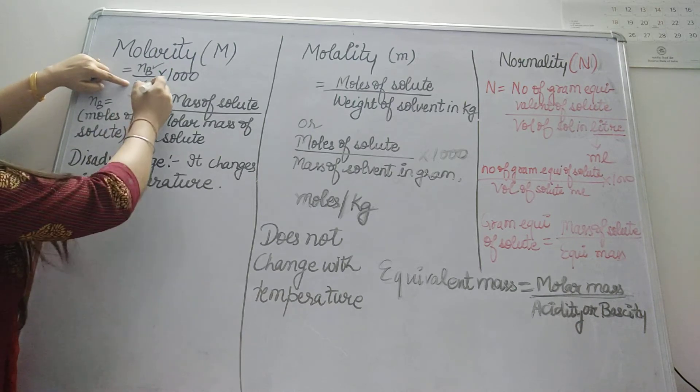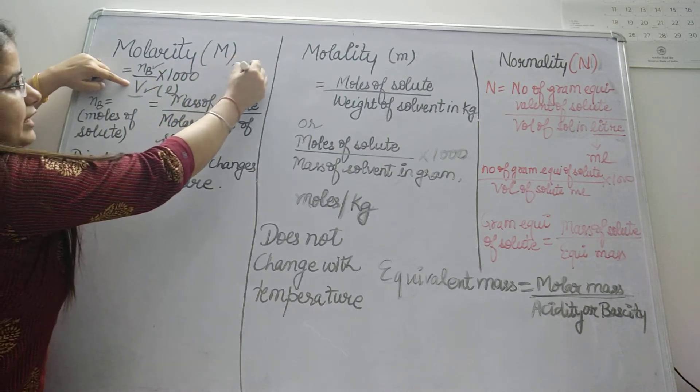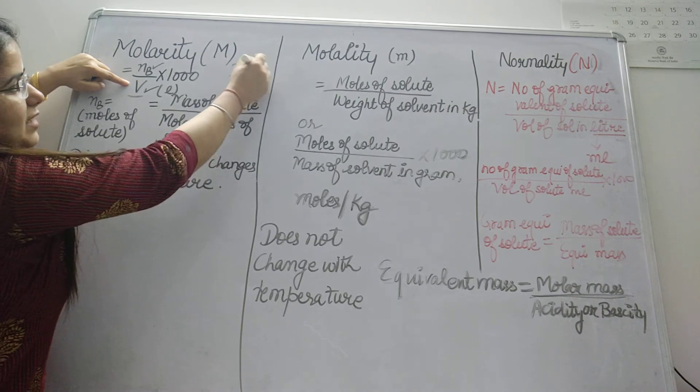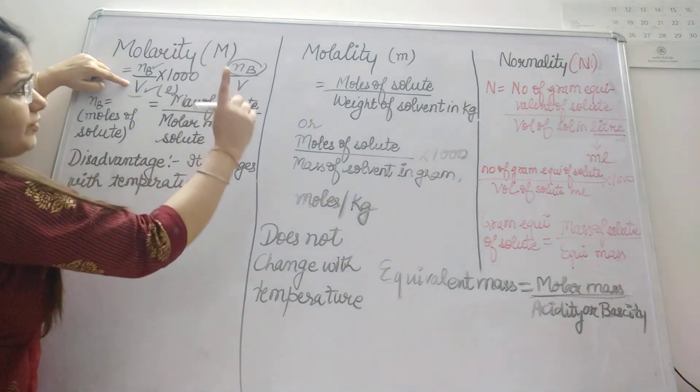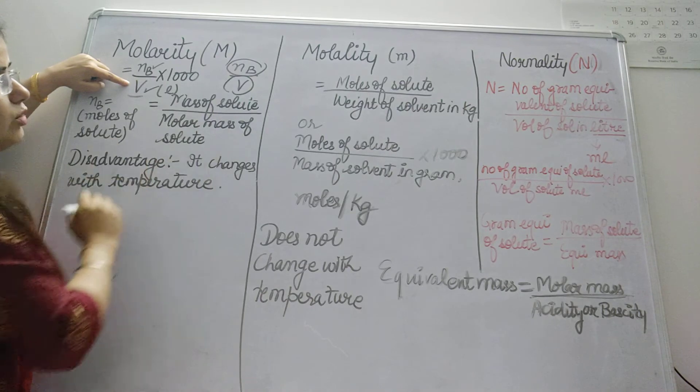If it is in liters, you will write only nb upon V. That nb is number of moles of solute divided by volume of solution.